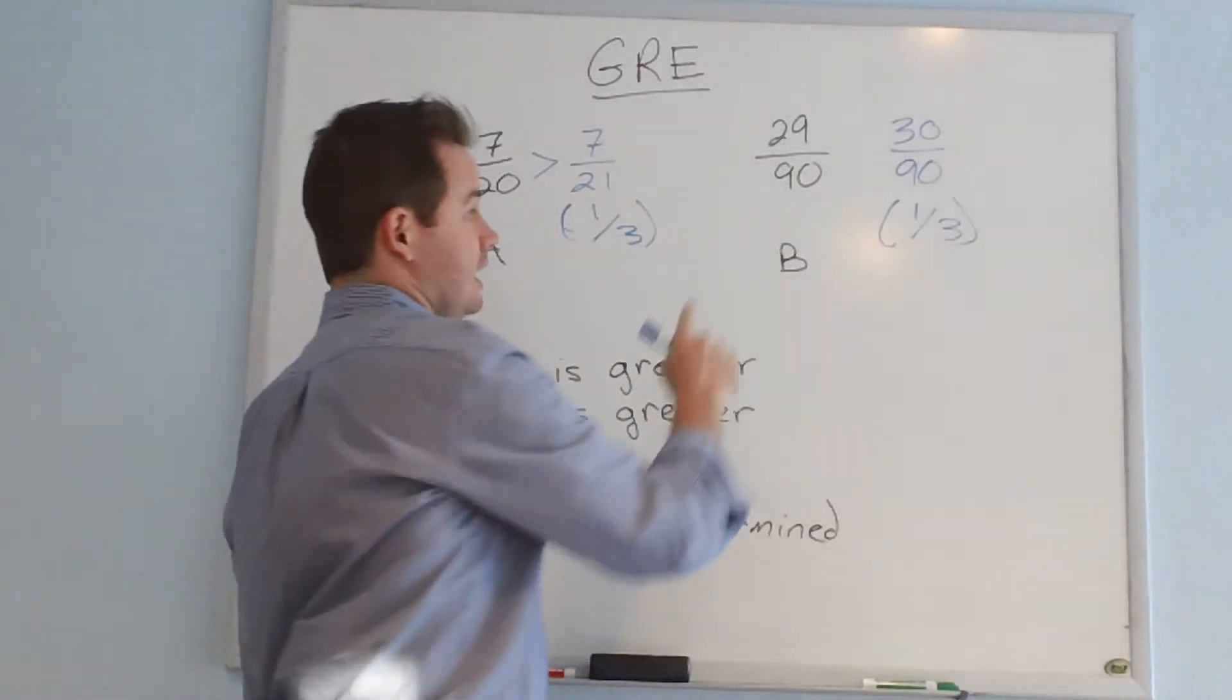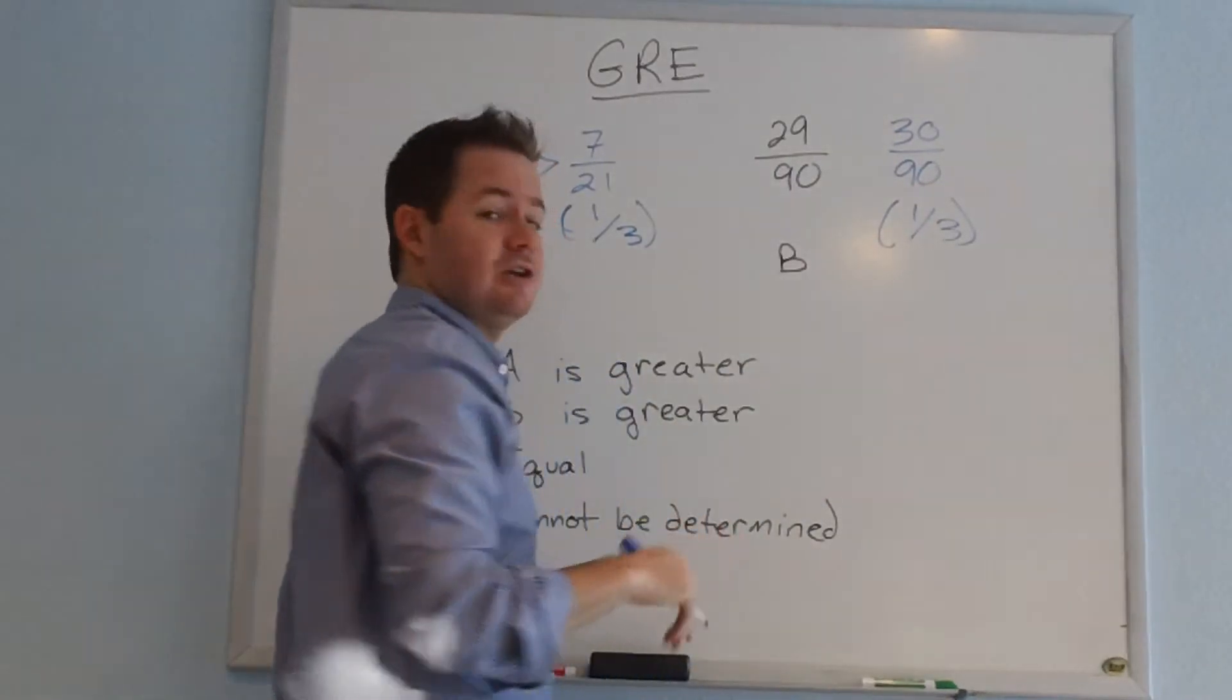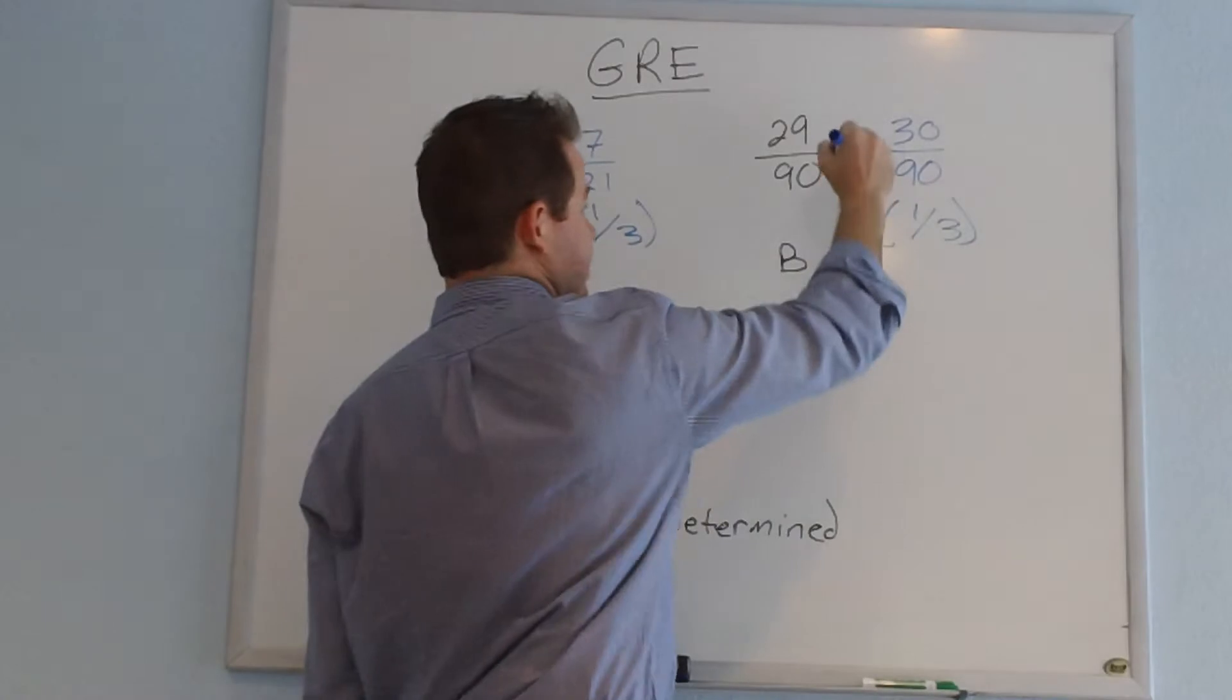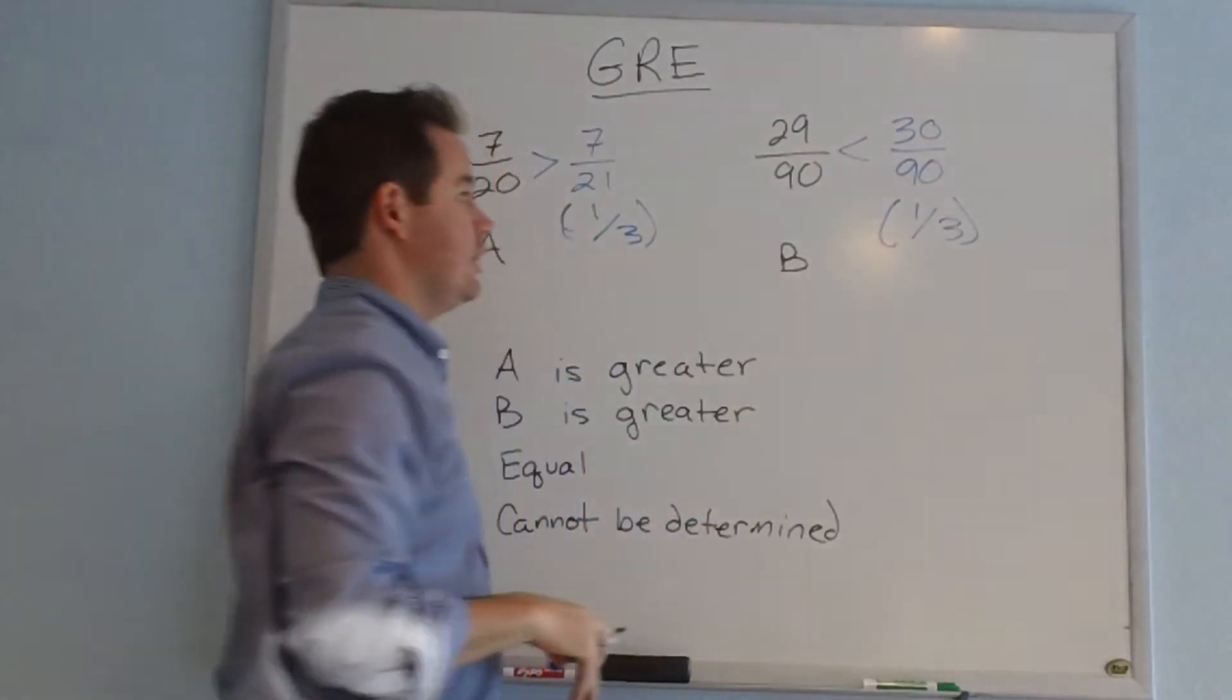Now let's take a look. 29 is less than 30, and since that's in our numerator, that means our fraction, 29 over 90, will actually be less than 30 over 90.